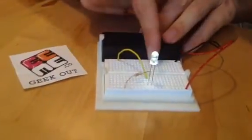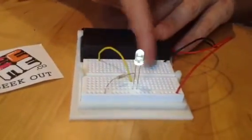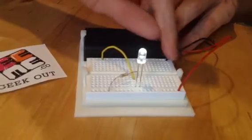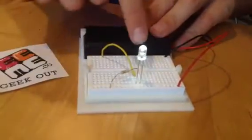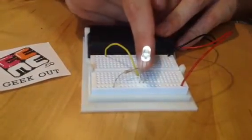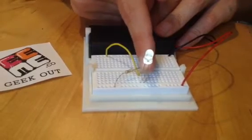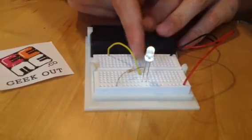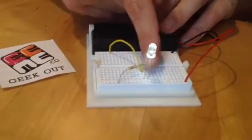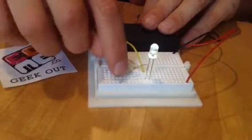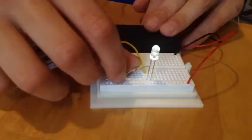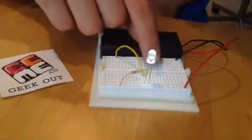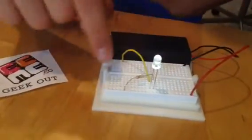Then it's running over here. All of these holes are connected, but they run vertically. So the positive wire of the LED bulb is connected to this row here, where the resistor is also connected to the positive.